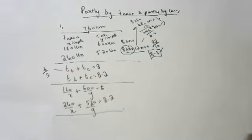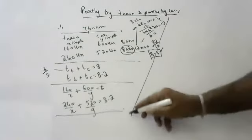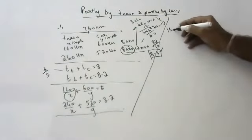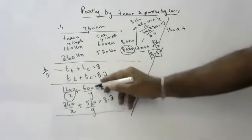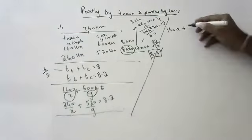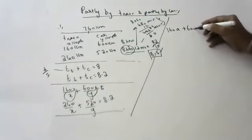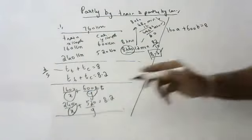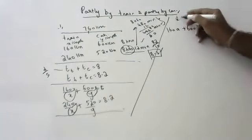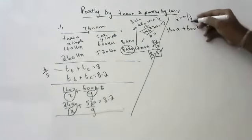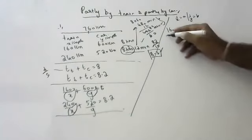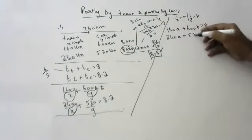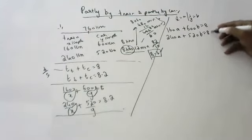As regular practice, we substitute: let 1/x equal A and 1/y equal B. So the first equation becomes 160A plus 600B equals 8, and the second equation becomes 240A plus 520B equals 8.2.